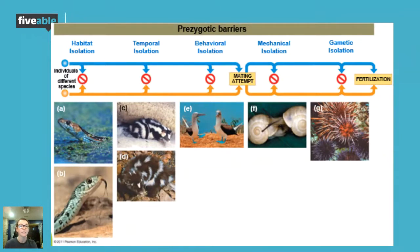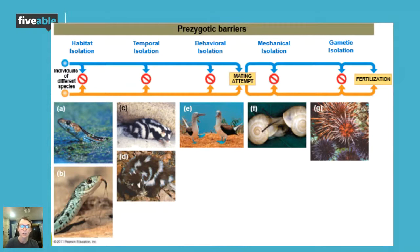Next is behavioral isolation — a personal favorite. This has to do with courtship rituals, which we usually see in birds. Birds have a special song or dance for mating, and each species has a separate song or dance that attracts their specific mates. There are tons of videos on different mating calls and mating dances and how that helps birds of the same species mate with one another rather than birds of a different species. So those three barriers — habitat, temporal, and behavioral — all happen before these organisms can even attempt to mate.